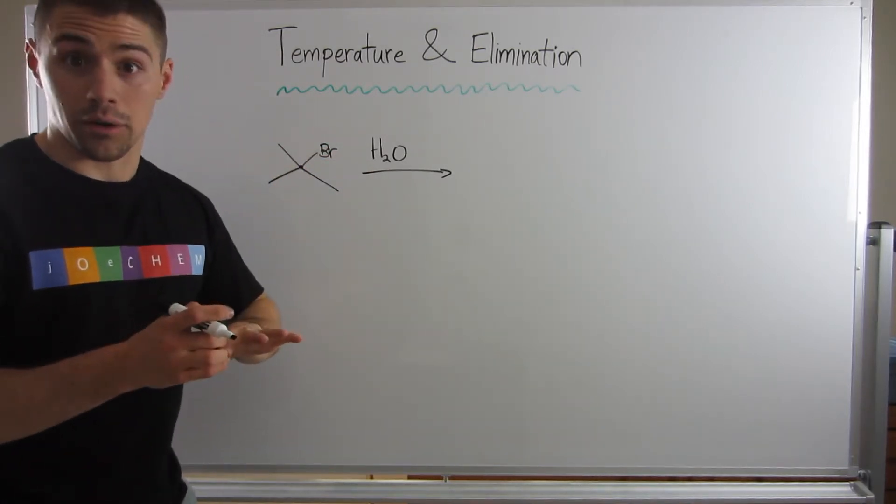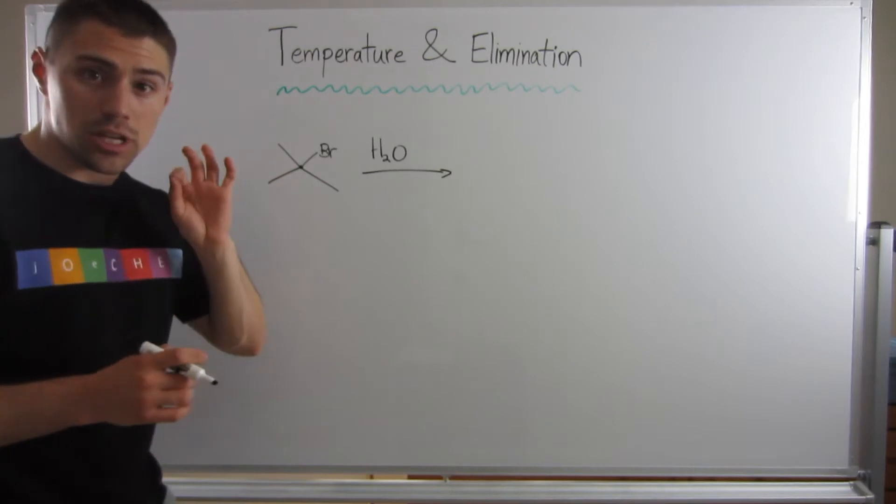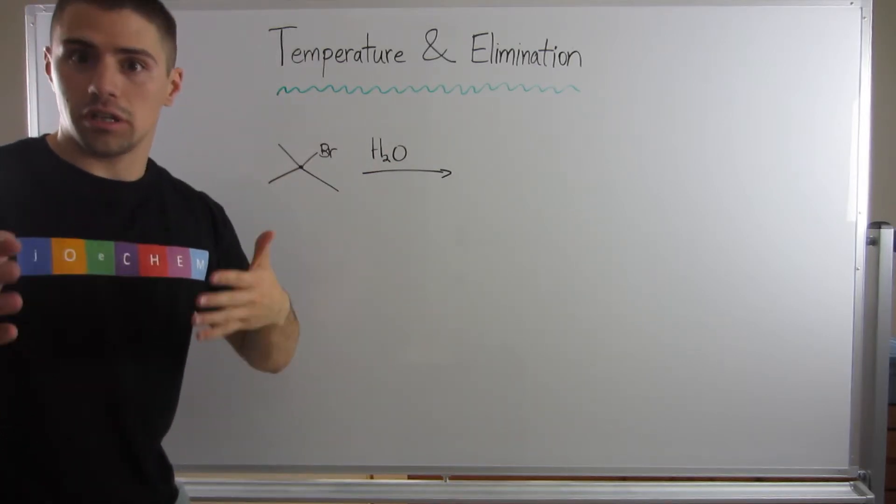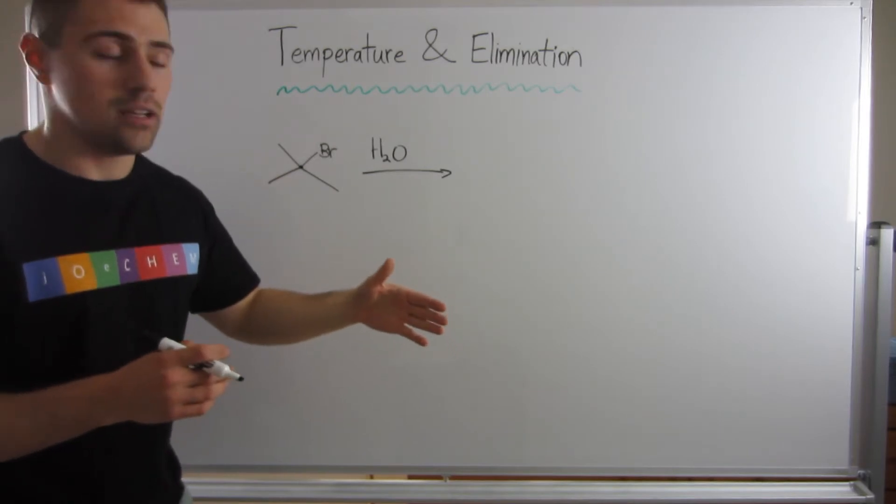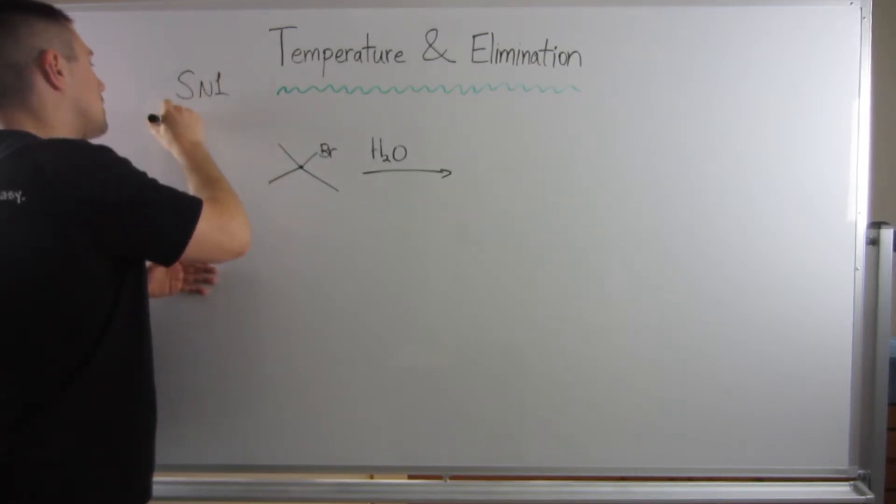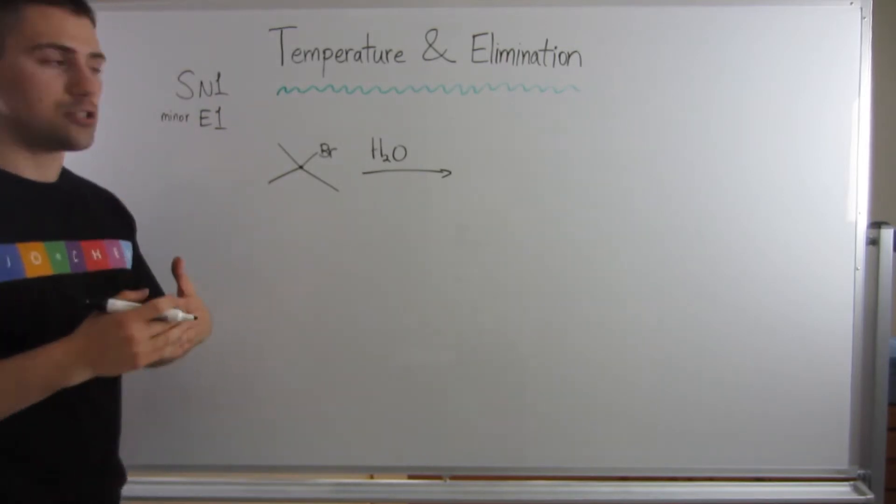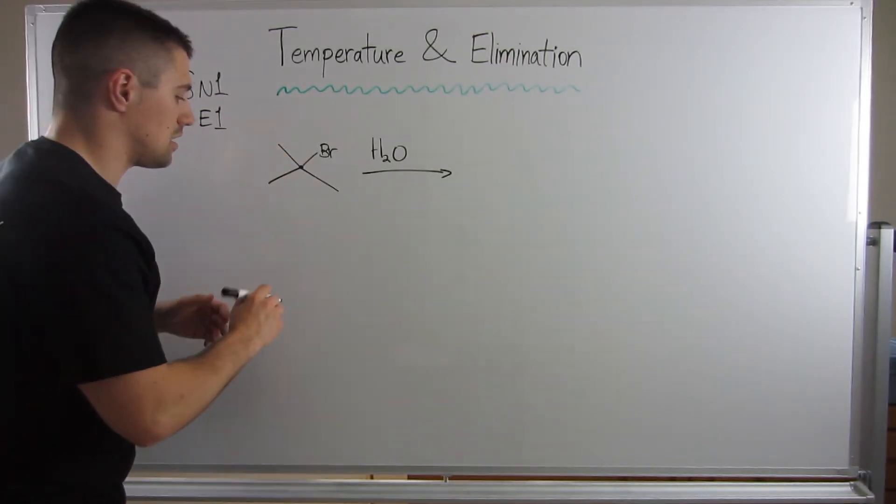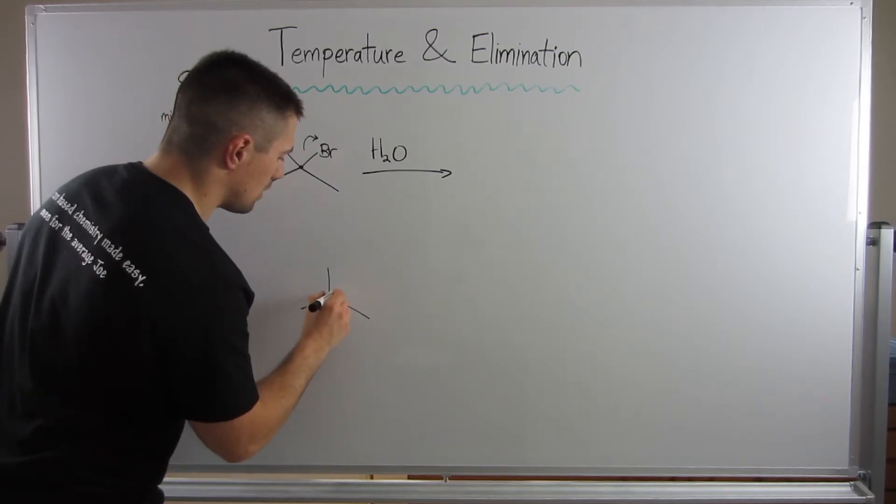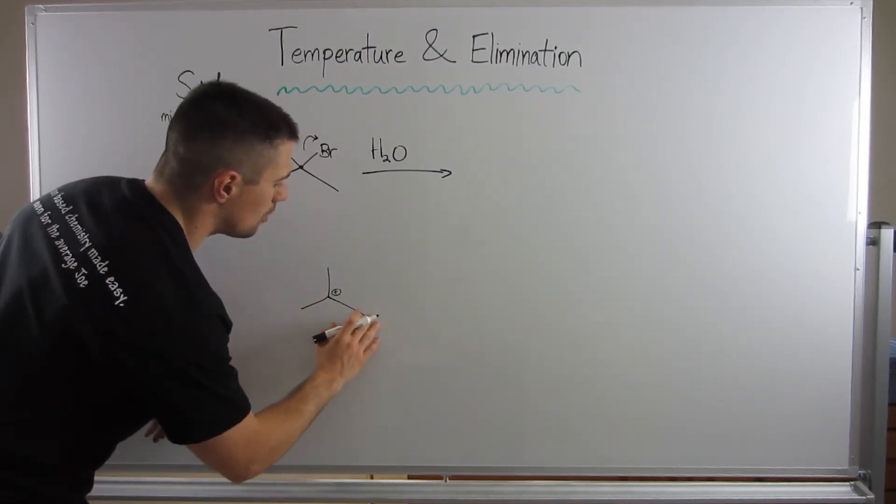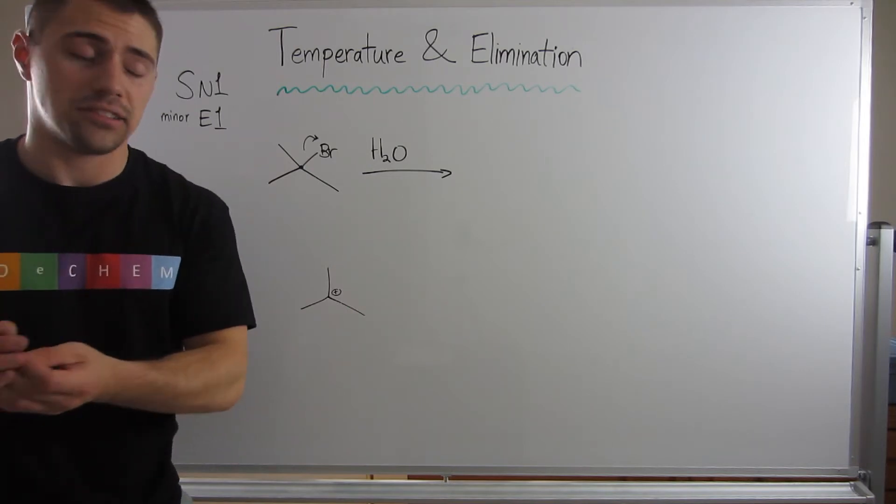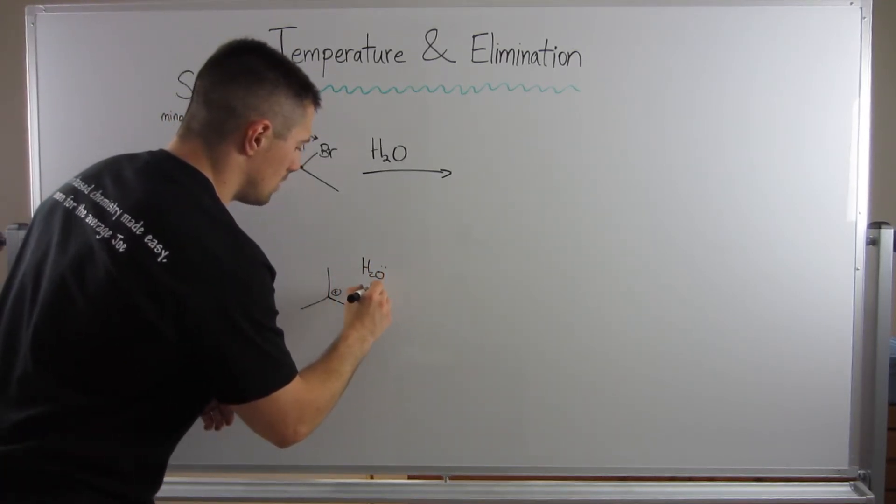We know tertiary, zero percent chance of SN2, good leaving group. Not only is H2O going to be our nucleophile, it could be our base, but we know we're in a polar protic environment. Polar protic, we know that's great for solvolysis. So this is going to be an SN1 and minor E1 type of situation. No matter what, mechanistically our very first step is that the bromine is going to leave. If I draw what's going on down here, we're going to form a tertiary carbocation. Remember, water not the best base, not the best nucleophile, but it's a better nucleophile than it is a base.